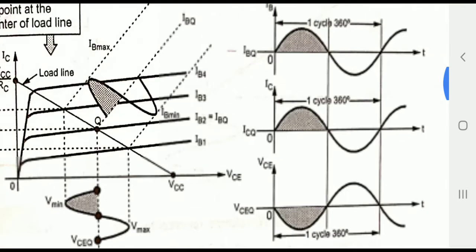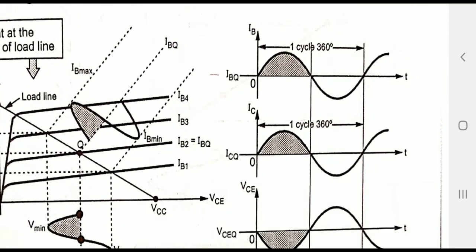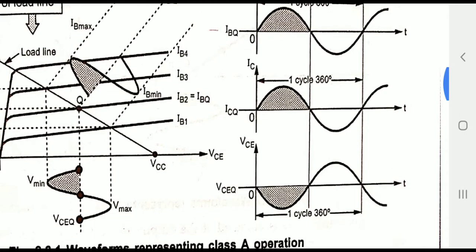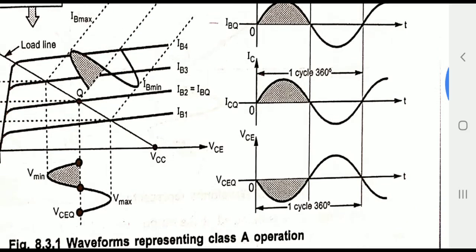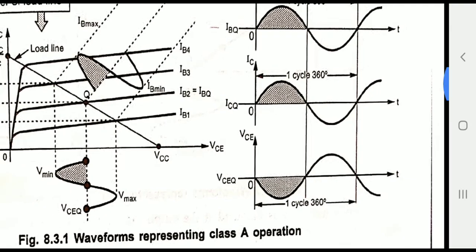Looking at the waveforms: Ib is the input current which is sinusoidal at 360 degrees, both positive and negative. Ic is the output current and Vceq is the output voltage. The output voltage has a 180-degree phase shift — that is the nature of the transistor between the input and output voltage.